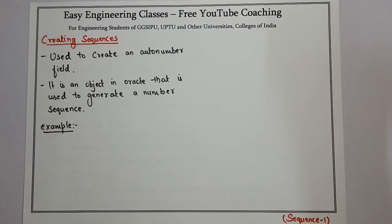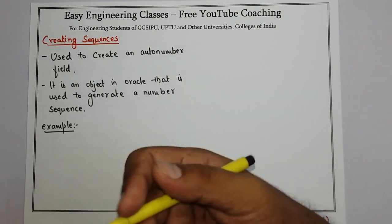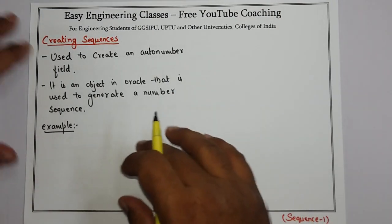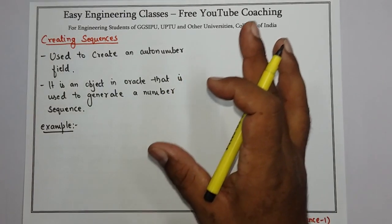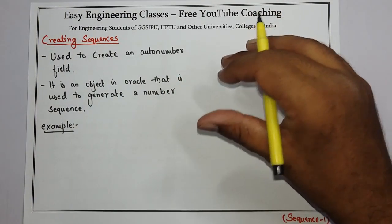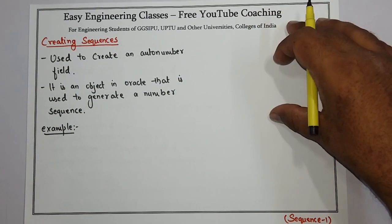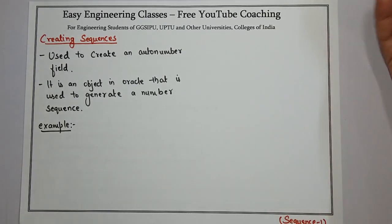It is basically an object in Oracle that is used to generate a number sequence which gets updated every time. Most of the times you can use sequences as the field which can store either a key or a number which should mention the number of records entered.